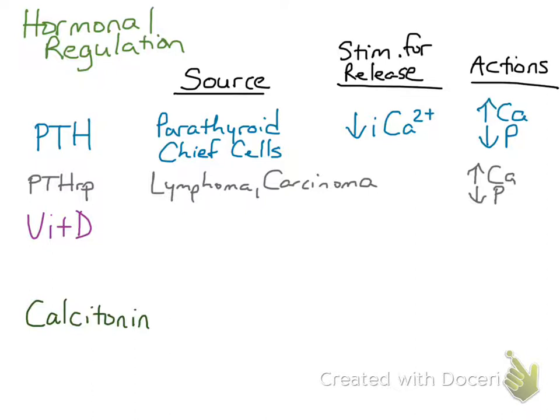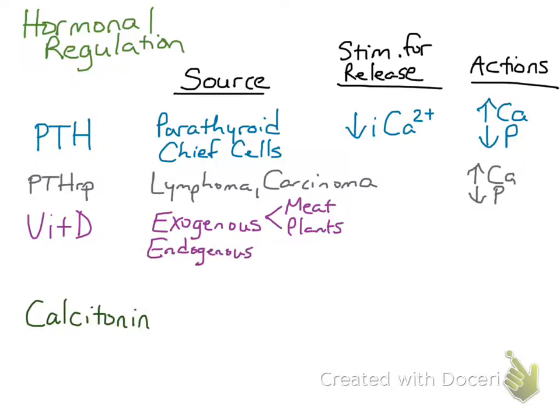Vitamin D can be acquired from the diet, or it can be made within the body, so we have both exogenous and endogenous sources. The exogenous sources can be acquired through either meats or ergocalciferol-containing plants. The endogenous sources involve multiple steps throughout the body — the skin is important in producing vitamin D, as well as the liver, and then finally the kidney.